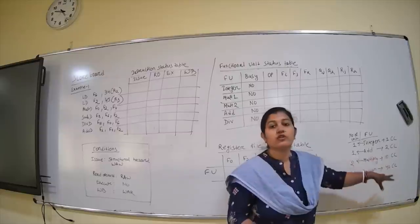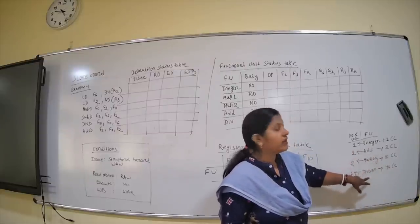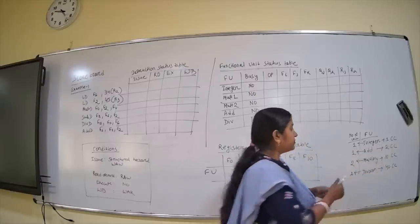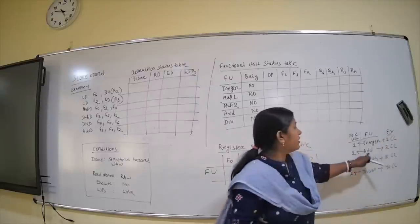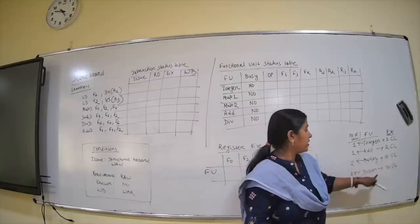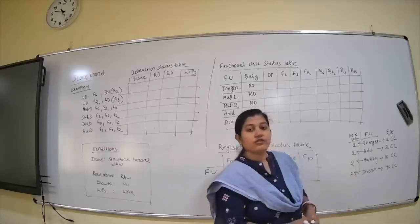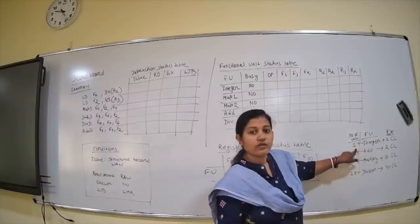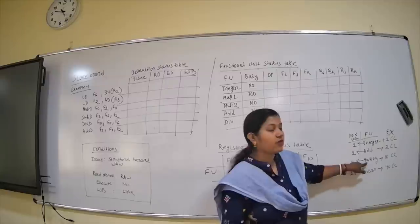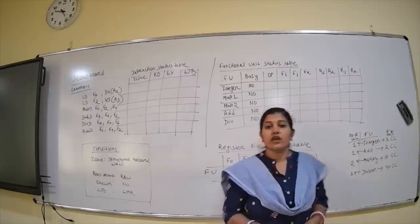We have functional units: integer, add, multiply, and division. Integer takes one clock cycle, add takes two clock cycles, multiply takes ten clock cycles, and division takes forty clock cycles. For the number of units: one integer unit, one add unit, two multiply units, and one division unit.